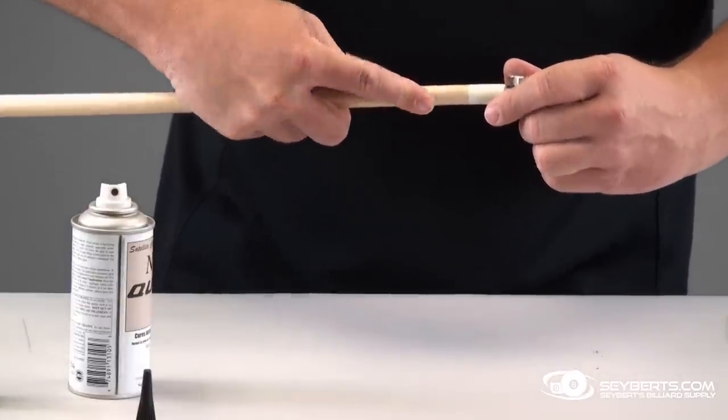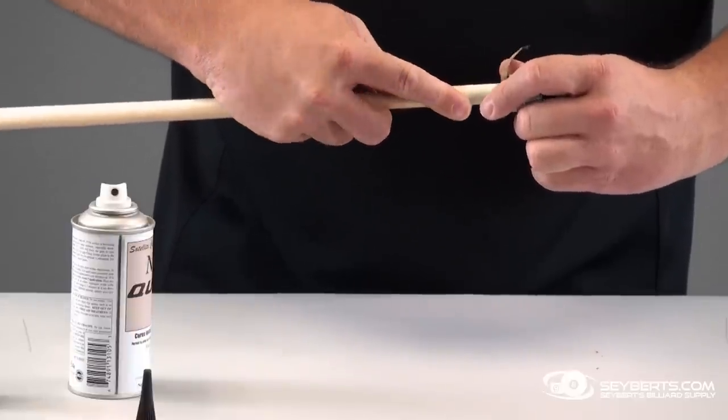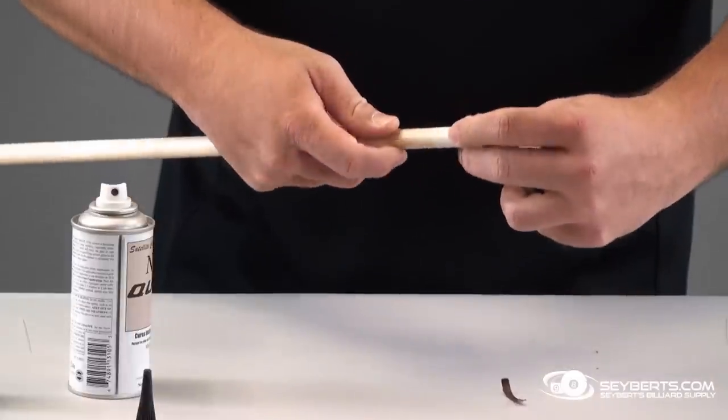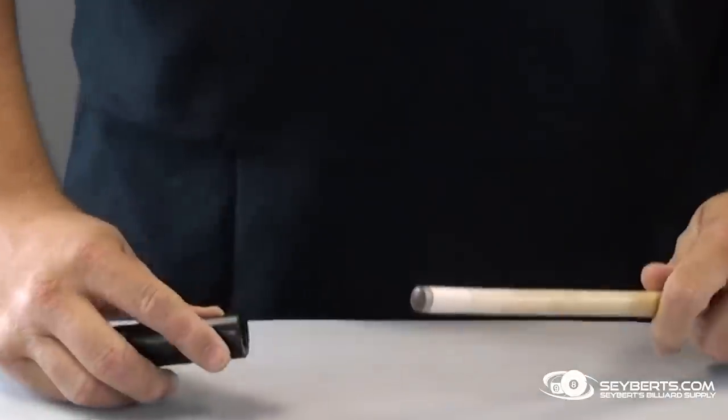You want to stay away from your ferrule here - there's no need to get close or anything like that. You're just bringing down the diameter to where we can get it into the Cut-Rite.